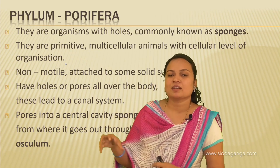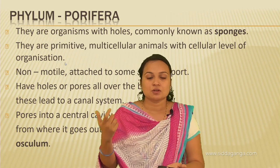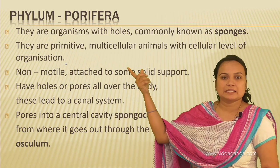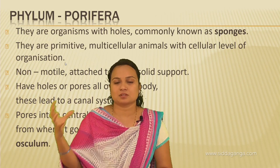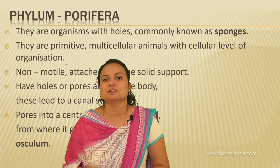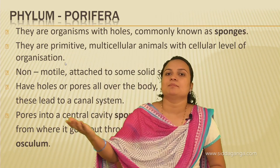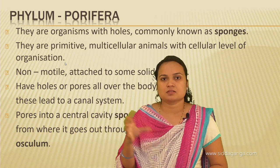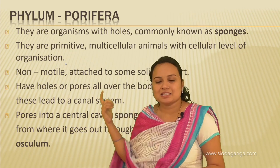When water enters through the pores, it takes dissolved oxygen along with food and enters the spongocoel. From the spongocoel, the water flows out through the osculum. While the water is going out, it carries the nitrogenous waste produced in the body. The entry point is the porocytes; water enters through porocytes and exits through the osculum.